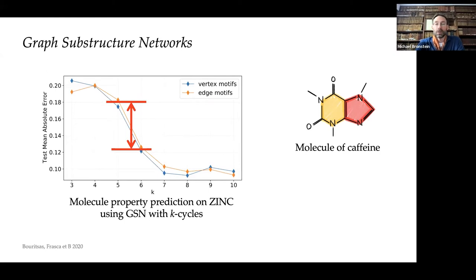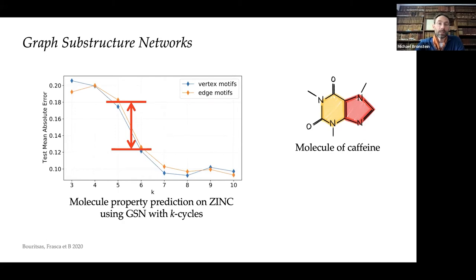A classical example is molecular graphs, where cycle-type structures such as aromatic rings are important in organic compounds — like the caffeine molecule with cycles of five and six. By pre-counting these structures, we showed significant improvement in predicting molecular properties like solubility, significantly outperforming standard GNNs with almost no additional complexity — just standard message passing taking into account extra structural features.